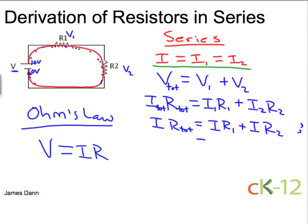And then here, I'll factor out the current. And now I'll divide both sides by I. The I's cancel, and we have our formula for resistors in series.